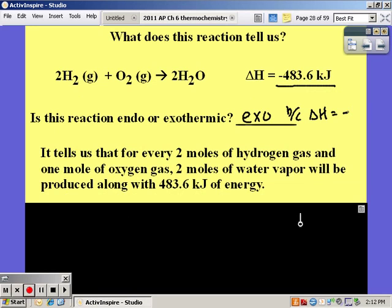This also tells us that for every 2 moles of hydrogen and 1 mole of oxygen, we're going to produce 2 moles of water and 483.6 kilojoules of energy. Because it's exo, it's a product because it's being released.